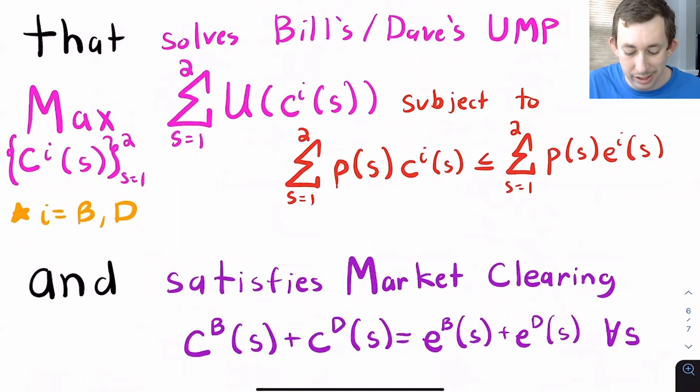I've just written out that same maximization problem we're all familiar with using that notation, using that sub notation where the state of the world ranges from sunny to snowy or from one to two. And it's got to satisfy market clearing. So if we drop two coconuts in any given state of the world, we have to eat both of those coconuts.